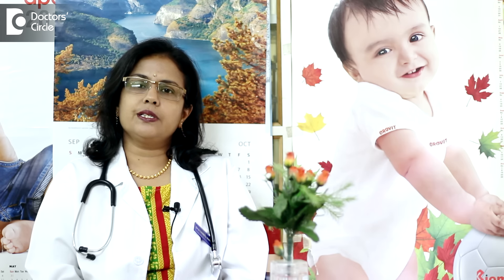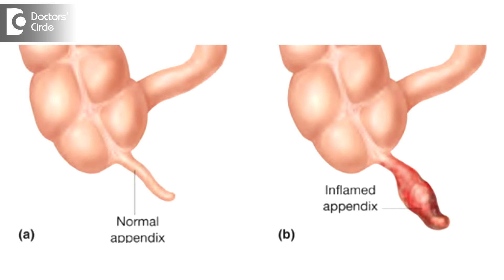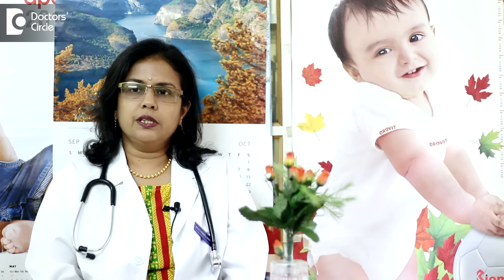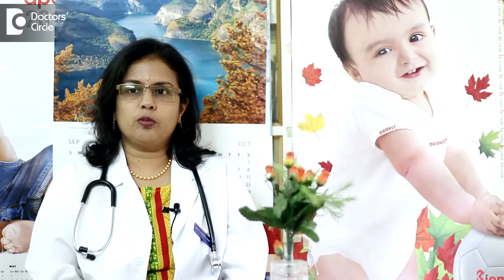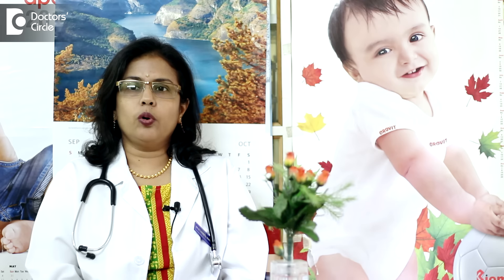Surgical conditions can be acute appendicitis, cholelithiasis, intestinal obstruction, intestinal perforation, volvulus, erector sheath hematoma, gallbladder infection, and ureteric colic due to a stone getting stuck in the ureter.